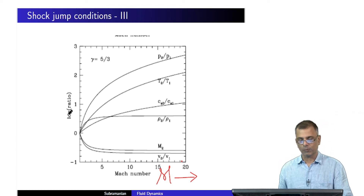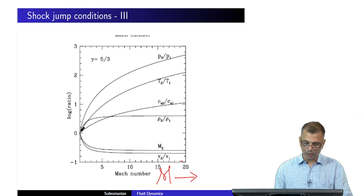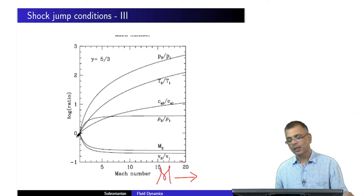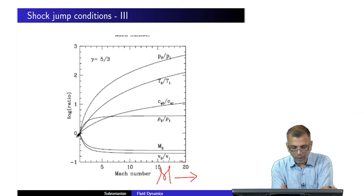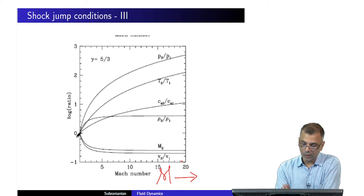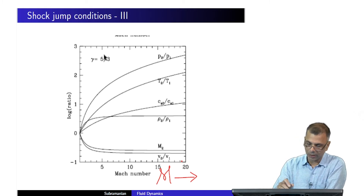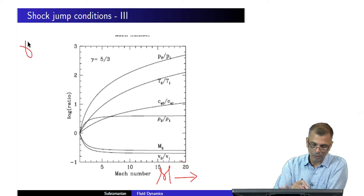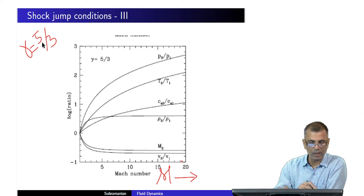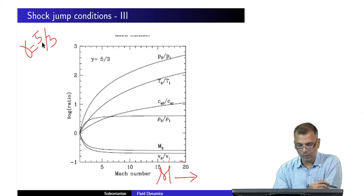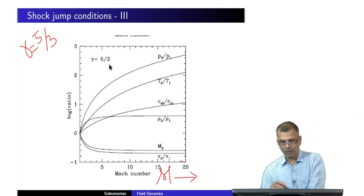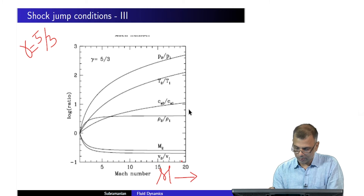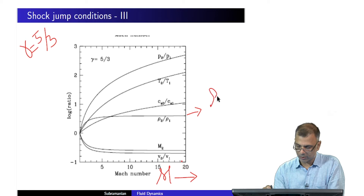Specifically, the log of the ratios is plotted, so here the ratio is 1, here it would be 10, here 100, and so on. This particular graph is plotted with gamma equal to five-thirds. Let's first look at the density jump — the curve representing rho2 over rho1.